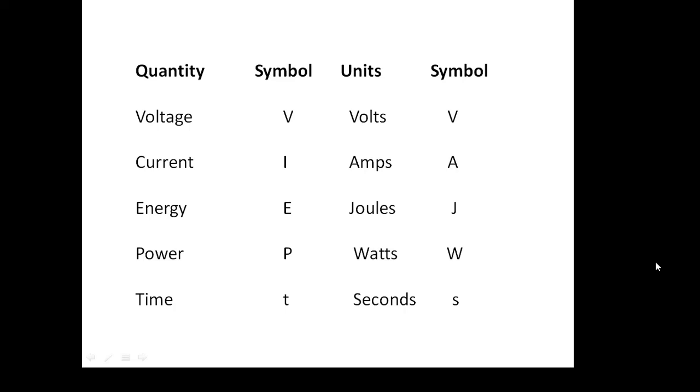These are all the electrical quantities that we need to know. We've covered three of these. Well, resistance should be on there as well, actually. Voltage V, volts V; current I, amps A; energy E, joules J; power P, watts W; time T, seconds s.